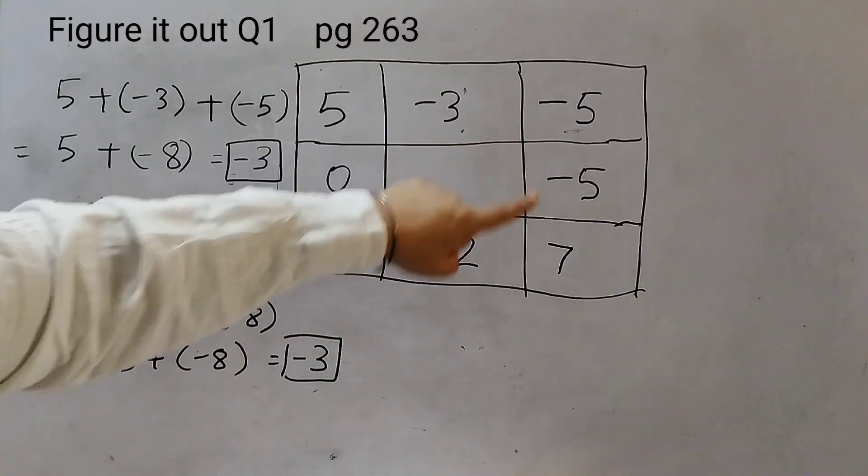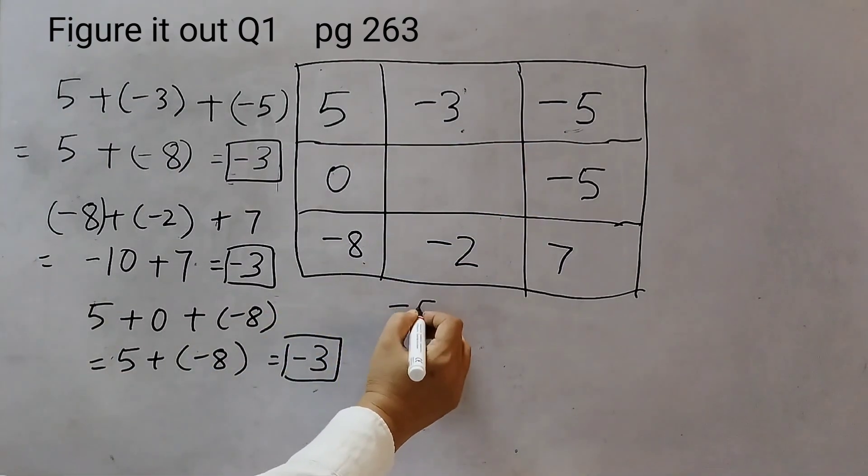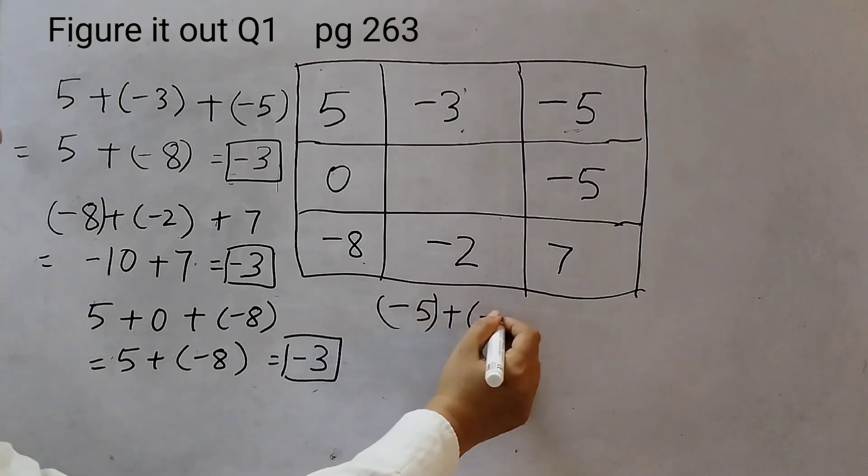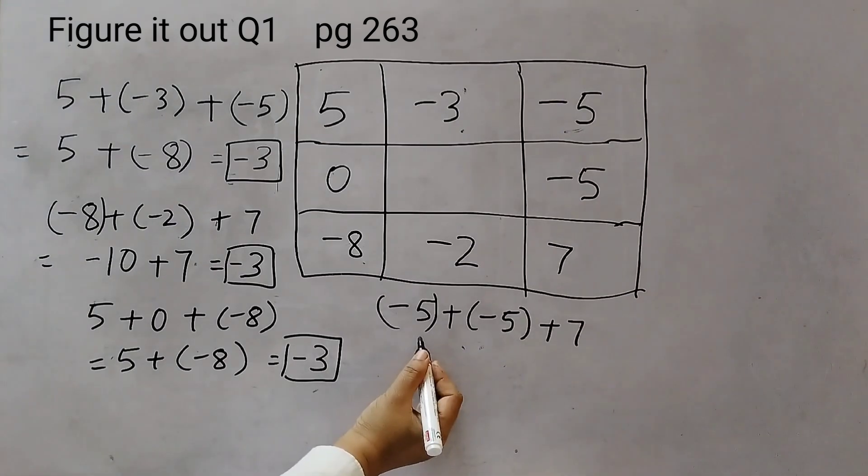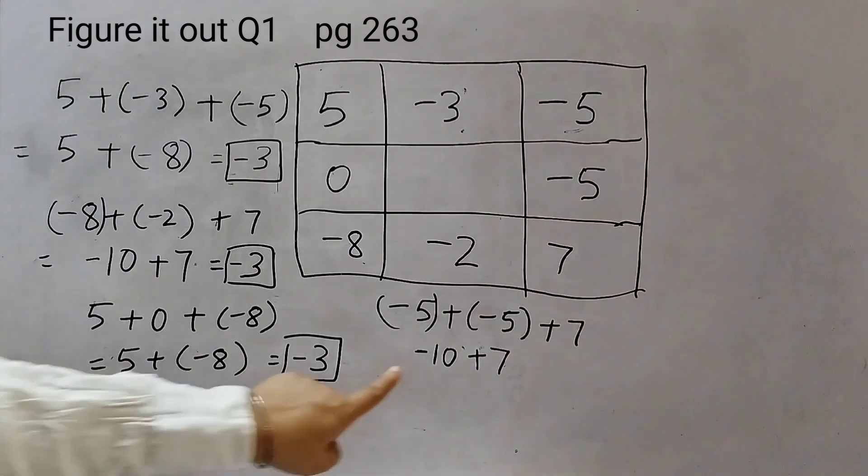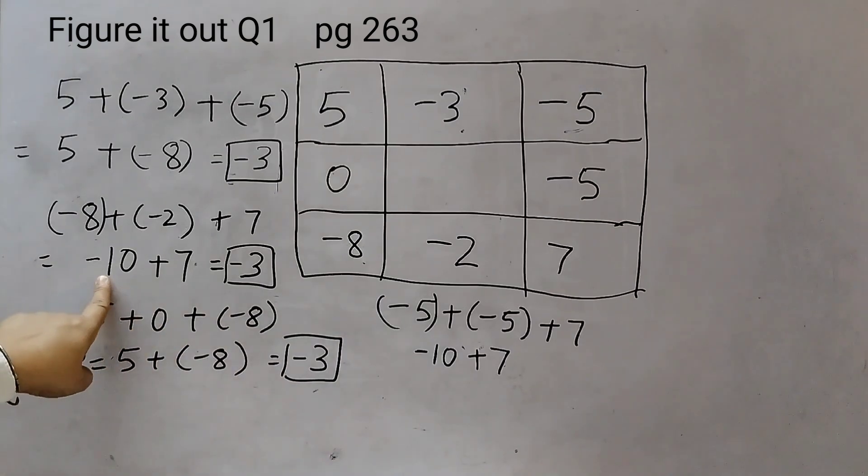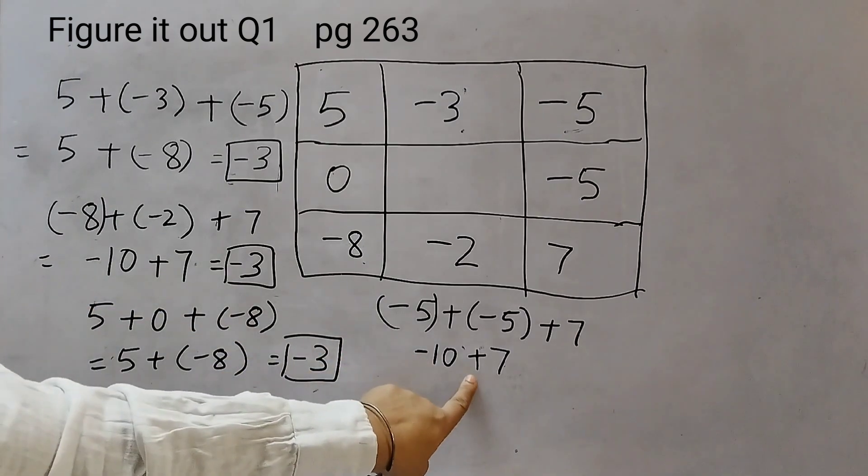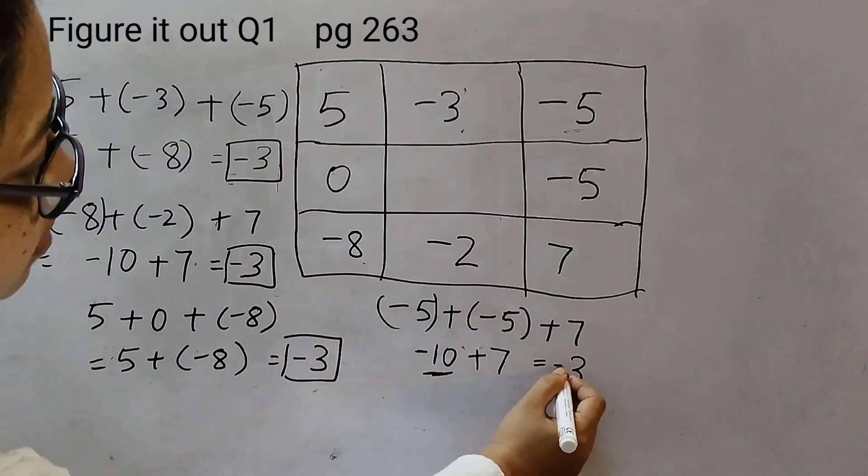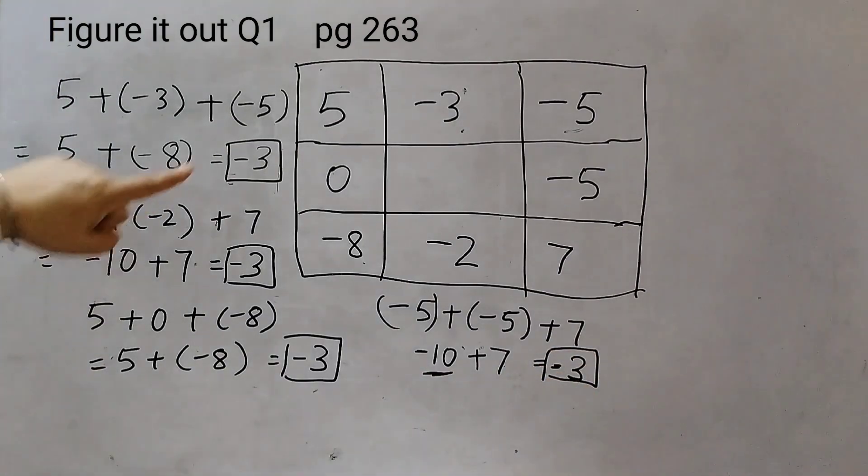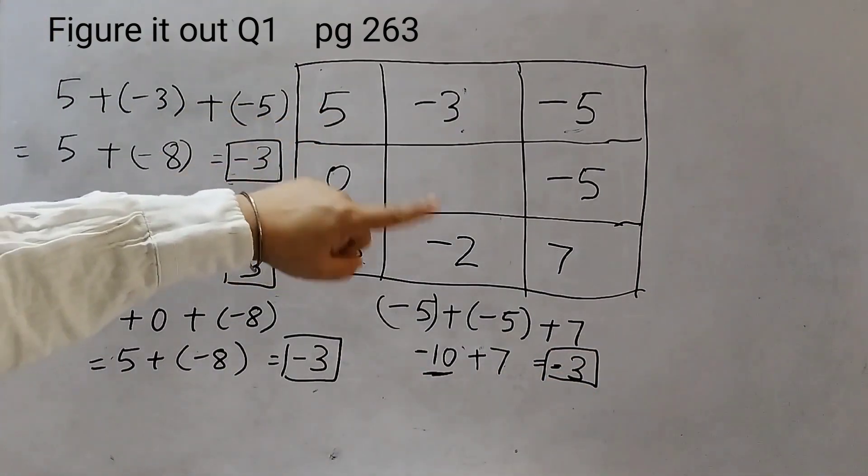And now, the right column. So, for right column, minus 5 plus minus 5 plus 7. Same sign, minus minus. So, add up. 5 plus 5, 10. Put a minus sign. Plus 7. This is exactly same as this. Minus 10 plus 7. So, opposite signs. That means, we will subtract. 10 minus 7 is 3. And take the sign of the bigger number. So, that's minus 3. So, we saw that when we added the top row numbers, bottom row, left column, right column.